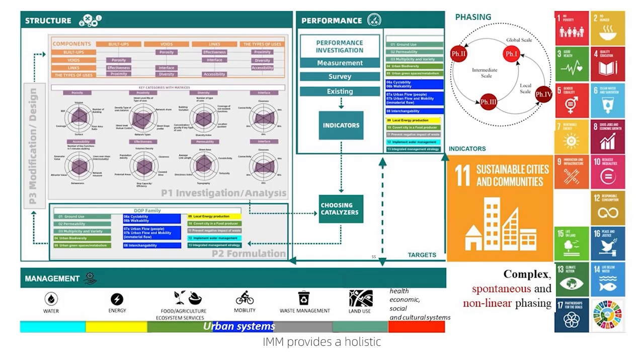IMM provides a holistic and iterative approach to urban design. It involves a multi-stage process consisting of investigation, assumption, transformation, and optimization. It emphasizes understanding the existing system, identifying weak subsystems as catalysts for transformation, testing and evaluating modification scenarios, and continuously improving the system's performance.